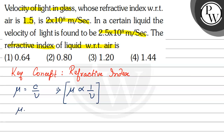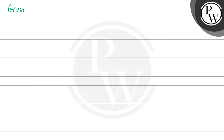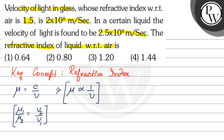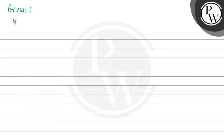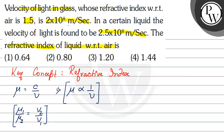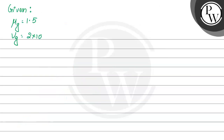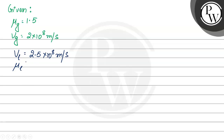So, mu 1 by mu 2 — the ratio of refractive indices for medium 1 and medium 2 — will be equal to v2 by v1. Now, the given values are: refractive index of glass with respect to air, which is mu g, is equal to 1.5. Velocity of light in glass, vg, is equal to 2 into 10 to the power 8 meters per second. Velocity of light in the liquid, vl, is equal to 2.5 into 10 to the power 8 meters per second. And we need to find mu l, the refractive index of that medium with respect to air.